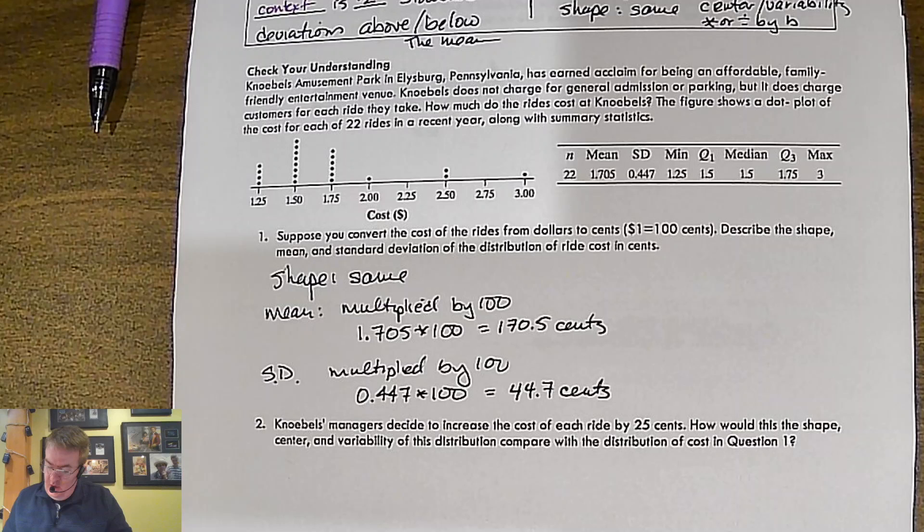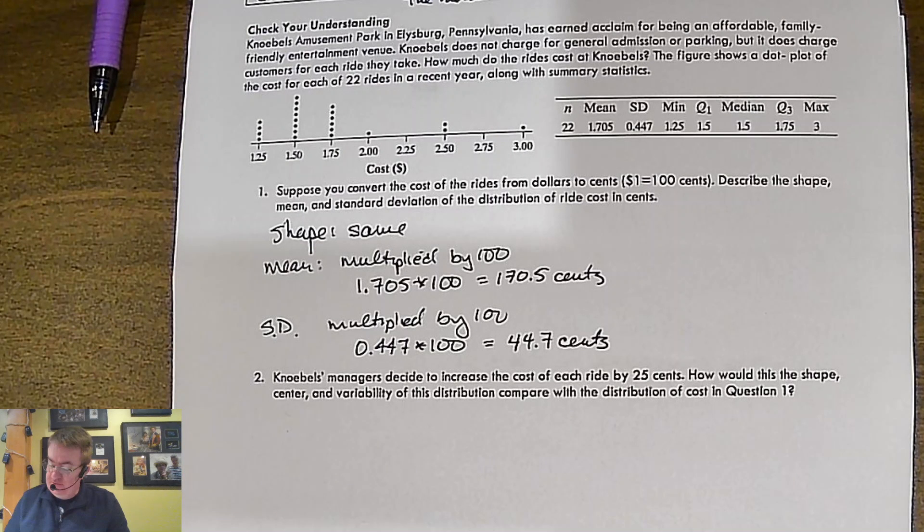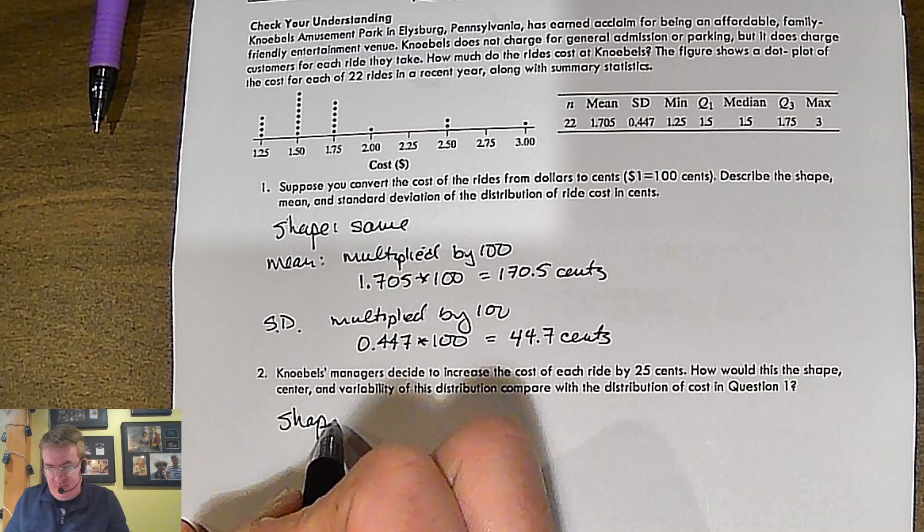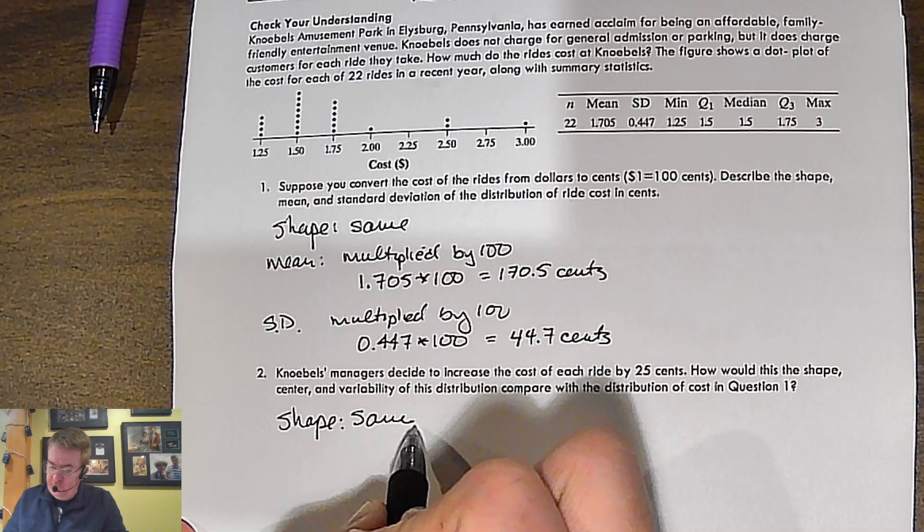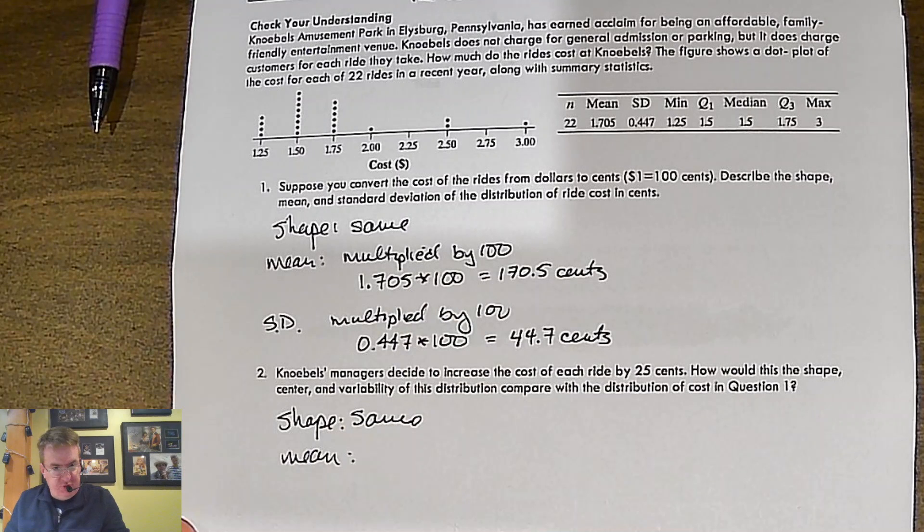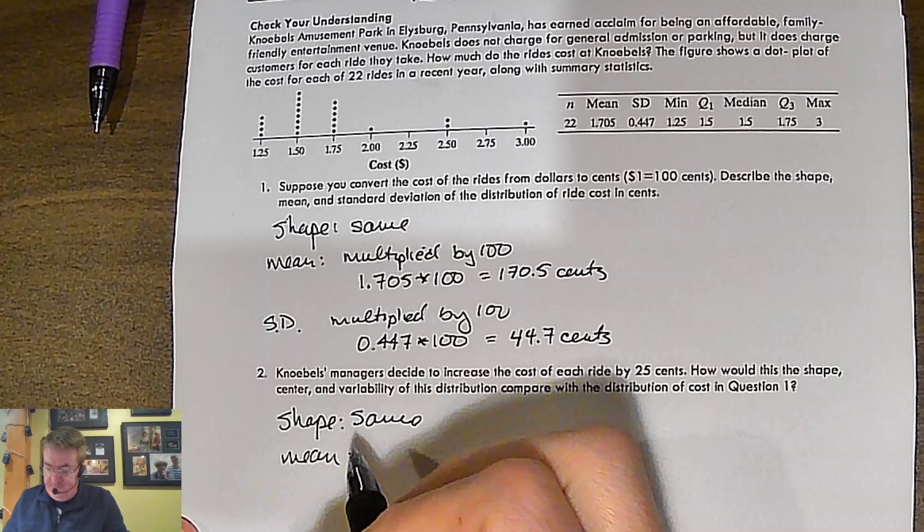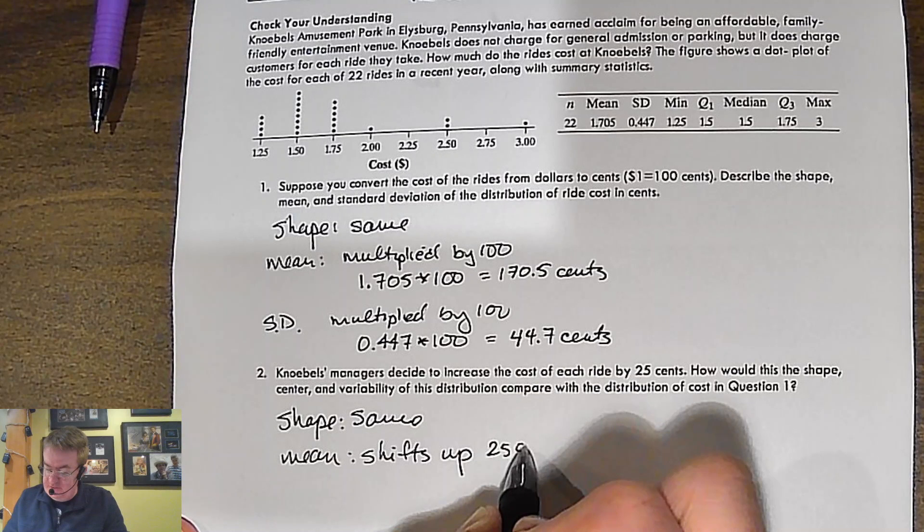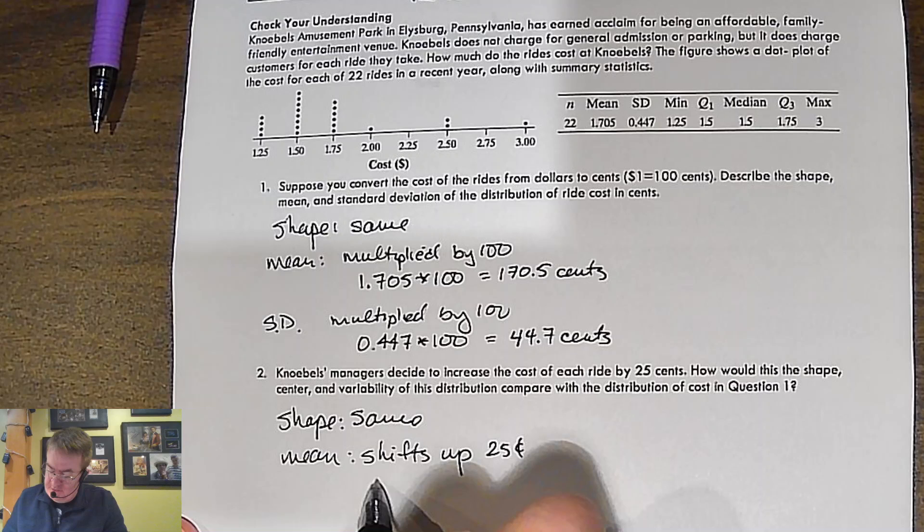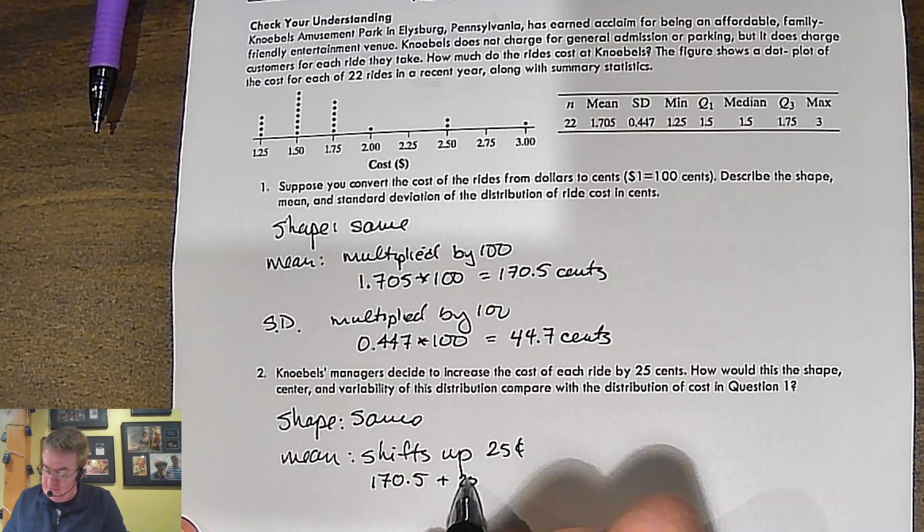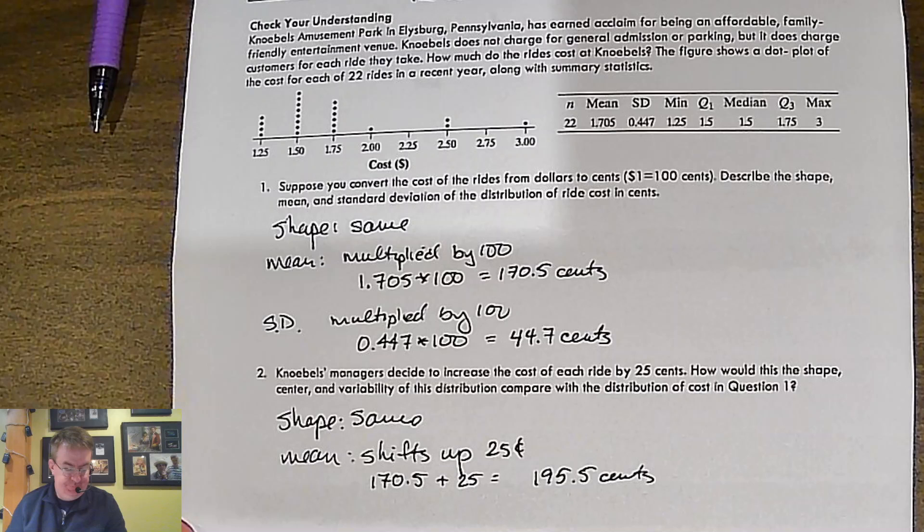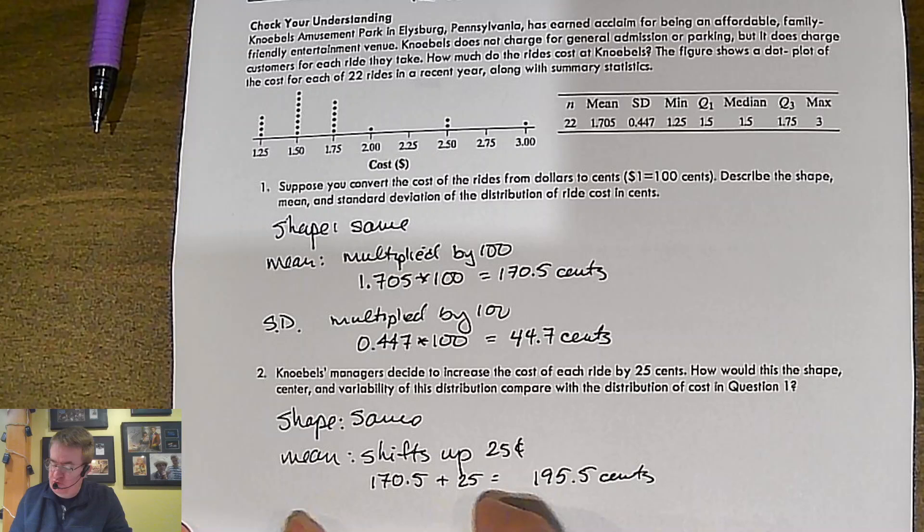Managers decide to increase the cost of each ride by 25 cents. So how is this going to do? Shape. Wow, it's going to stay the same. Have you noticed something that the shape doesn't change? Your mean is going to be, what's going to go up? It's going to be shifted up by 25 cents. So that means I'm going to take my 170.5 cents plus 25 cents. I'm going to get 195.5 cents. Standard deviation, what's going to happen there? Nothing. Because again, you're picking up everything and you're just moving it. You're not changing the relationship.